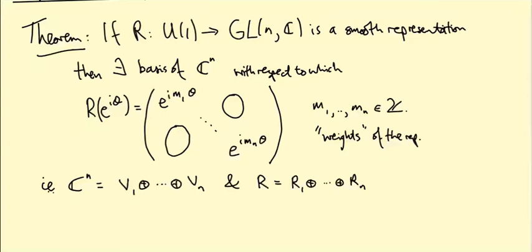So block diagonal here, because we've got n summands, that really means diagonal matrix, such that Rₖ(e^{iθ}) is just this e^{imₖθ} representation. Okay, so we'll talk more about direct sums later. For now, you can just think there's a basis with respect to which it's a diagonal matrix of e^{imₖθ}'s.